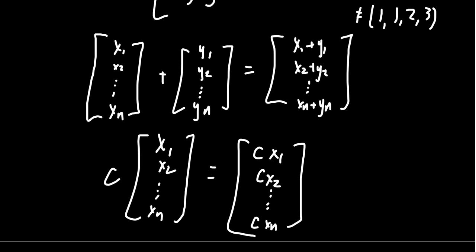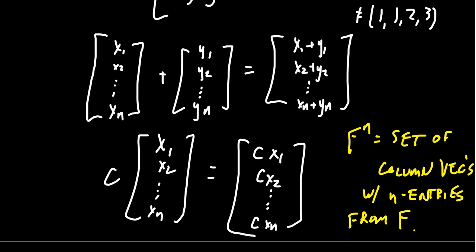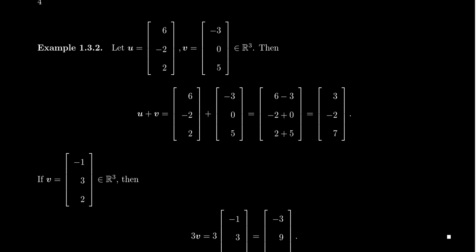And this can be done for any field whatsoever. And so we actually introduced the notation F to the n right here. This is going to equal the set of column vectors with n entries, entries from the field F. And so some examples of this type of thing. We could talk about the vector space R^n. We could talk about the vector space Q^3. So this would be vectors with three rational entries. We could talk about the complex vector space C^2. This would be vectors with two numbers which are complex numbers. And so this turns out to not be any more complicated than one might think.